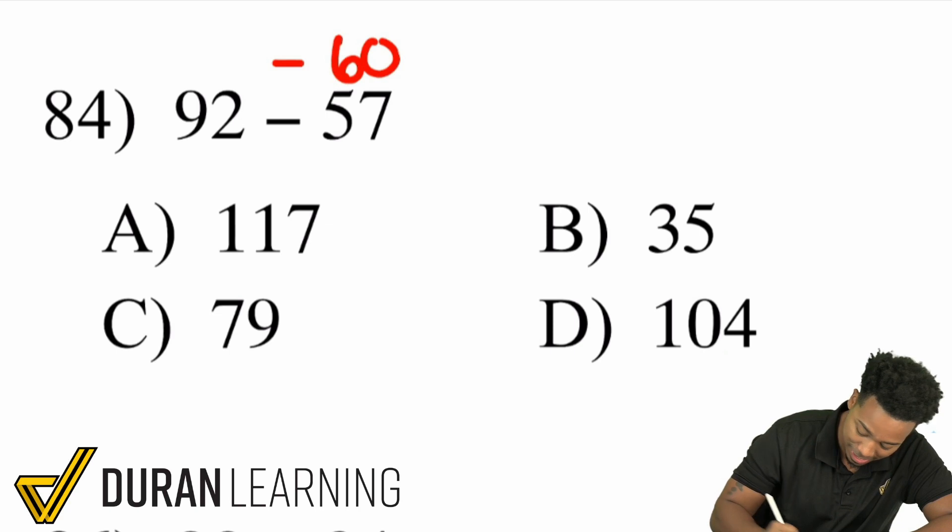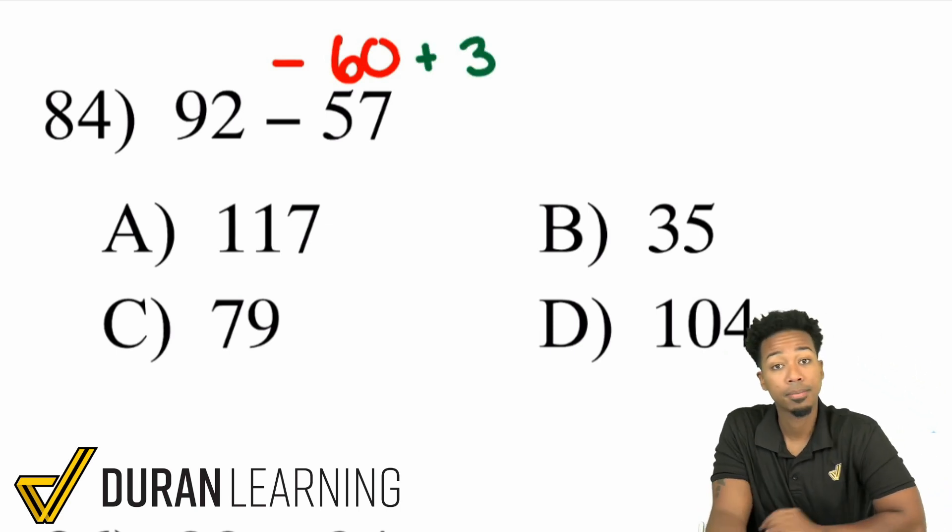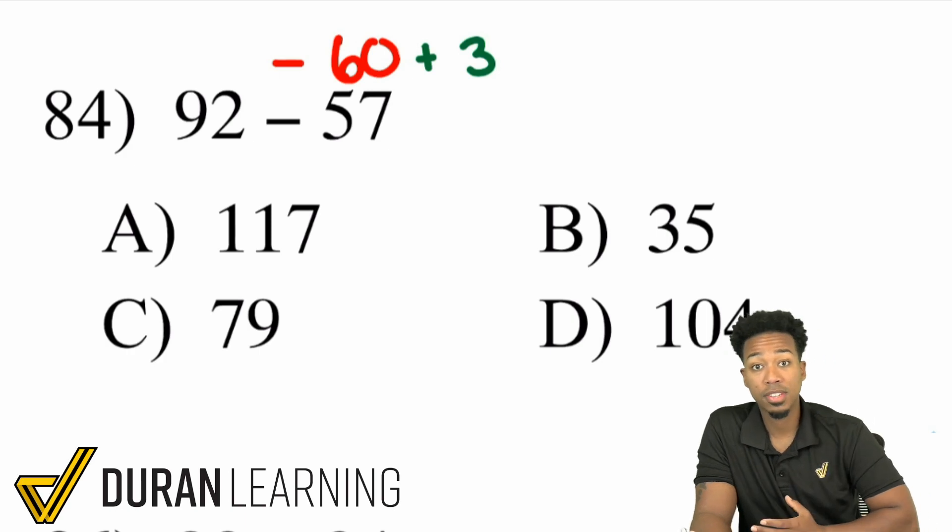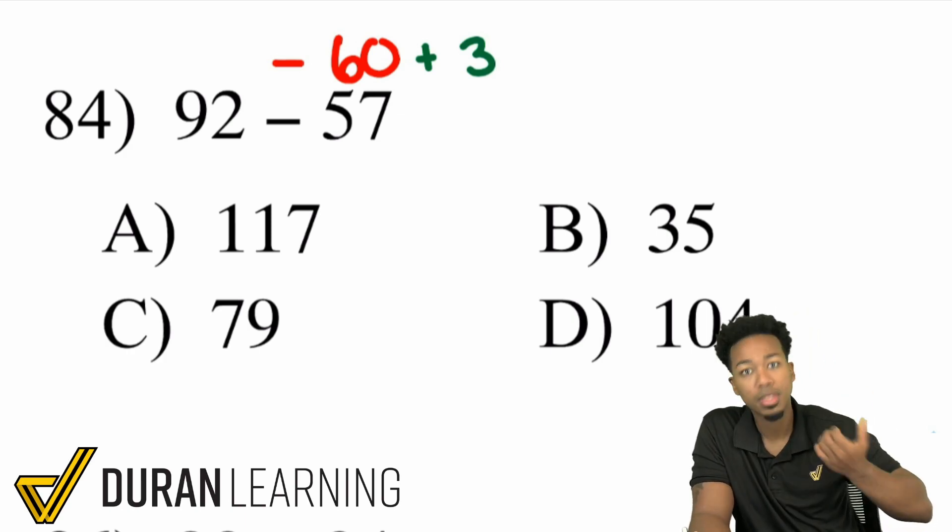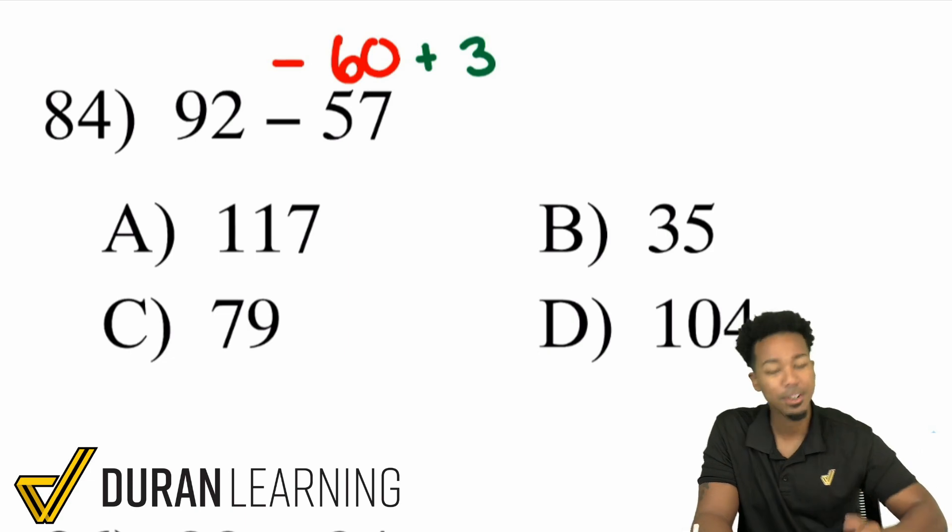Or you can estimate and compensate which is a really good strategy for subtraction. You can take away 60 but then you can add 3 back. Because again taking away 57 is the same as taking away 60 but then putting 3 back. And there it is.